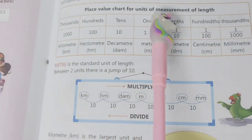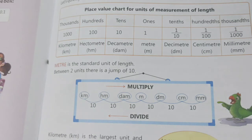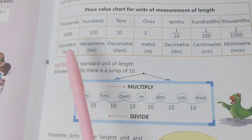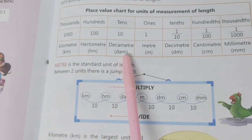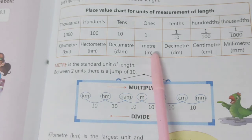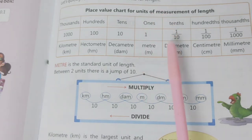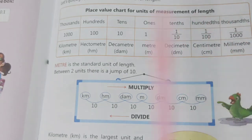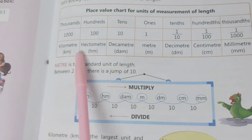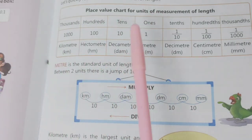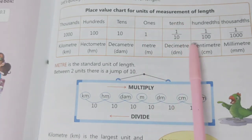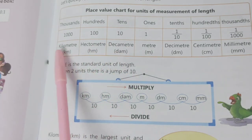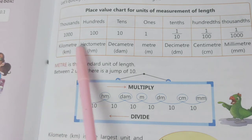Place value chart for units of measurement of length. Here the greatest value is kilometer, next is hectometer, then decameter, the standard unit meter, then smaller to meter is decimeter, smaller to decimeter is centimeter, and millimeter. You have to keep in mind these prefixes: kilo, hecto, deca, then the standard unit meter, deci, centi, and milli. You have only seven units here.